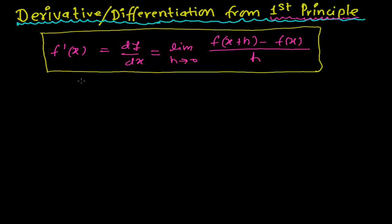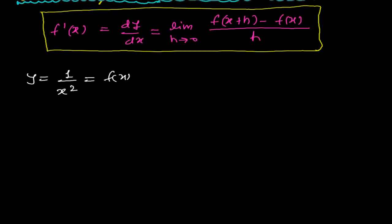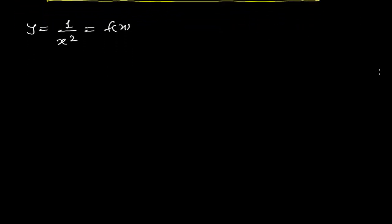So now here in this video we are going to find out the differentiation using the first principle. Let me take an example. Let me suppose y equals to 1 upon x squared. Or you can say it is f(x) also — it's the same thing. So our function is 1 upon x squared, and we are going to differentiate this by using the first principle.